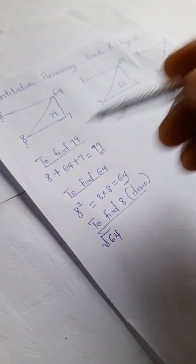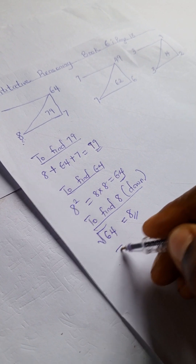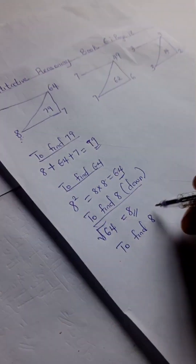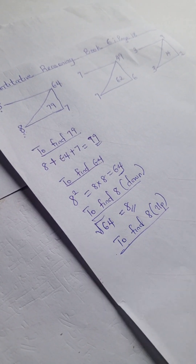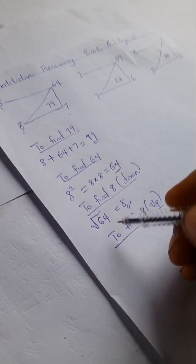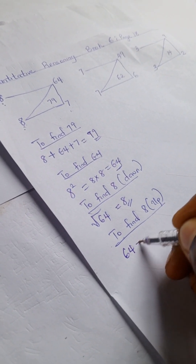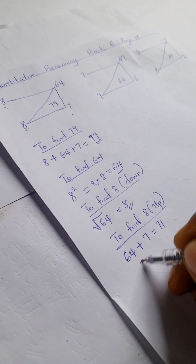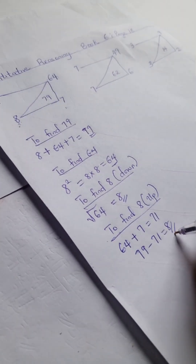To find 8 up — remember we sum 8, 64, and 7 to get 79 — so we reverse it. We have 64 plus 7, which gives us 71. Then 79 minus 71 gives us 8.